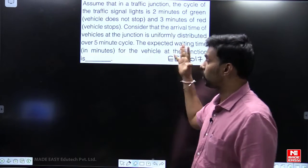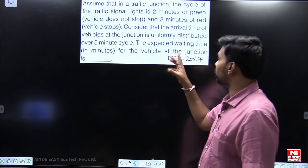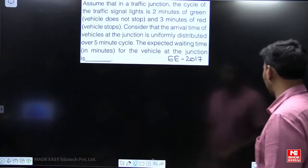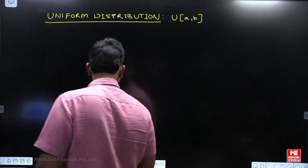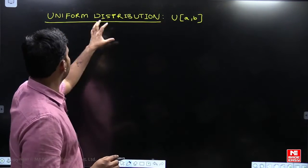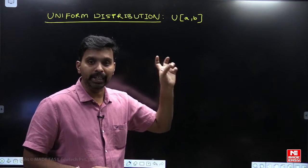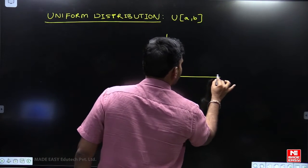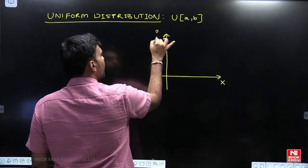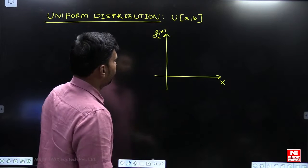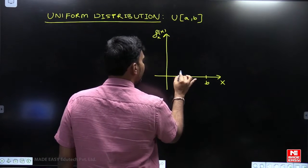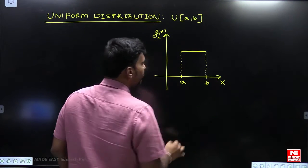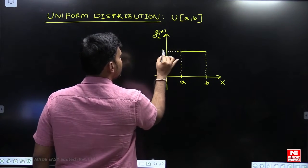This question is related to uniform distribution, which is also called rectangular distribution. Uniform distribution means what the name itself says — it is a uniform probability distribution, meaning the probabilities are distributed uniformly. If you look at this exactly, this is our random variable and this is our probability density function. Within an interval (a, b), if the probabilities are distributed uniformly, it is constant.